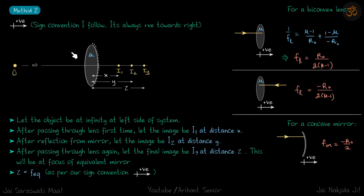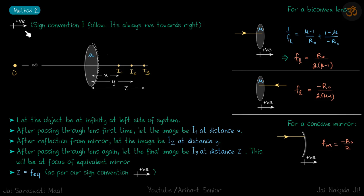In the proper way, these are the sign conventions I follow: positive towards the right. The typical common convention takes the direction of the incident ray as positive, but I don't follow that. I feel it is clearer to always take the right side as positive regardless of the direction of the incident ray.